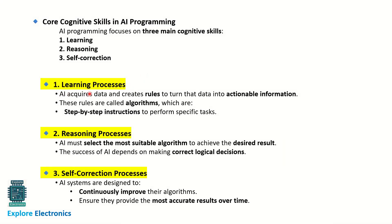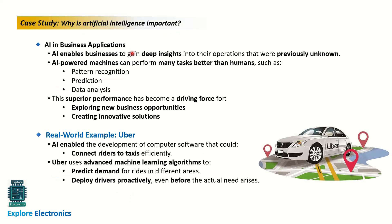In the learning process, AI acquires data and creates rules — called algorithms — which are step-by-step instructions to perform specific tasks. In the reasoning process, AI must select the most suitable algorithm to get the desired result; the success of AI depends on making correct logical decisions. In the self-correction process, AI systems are designed to continuously improve their algorithms to ensure the most accurate results over time.